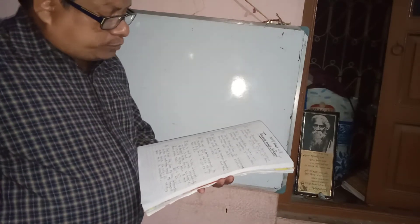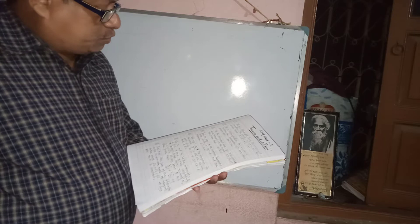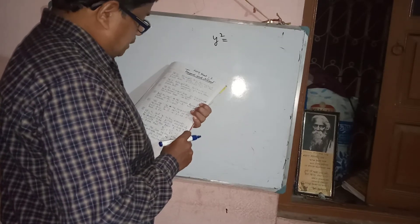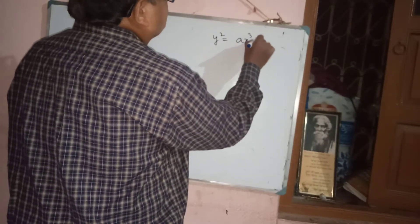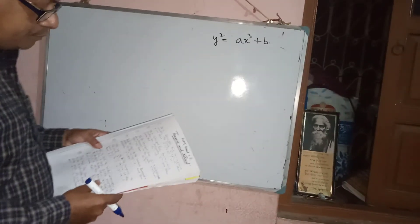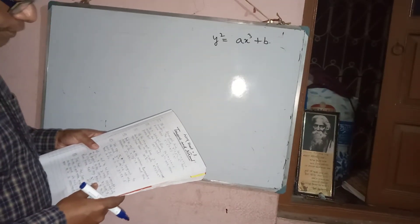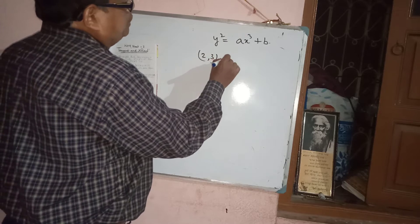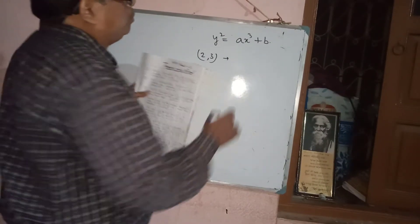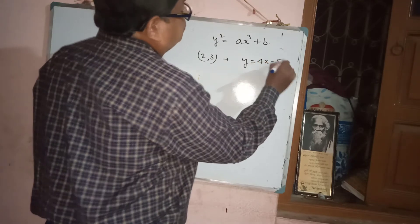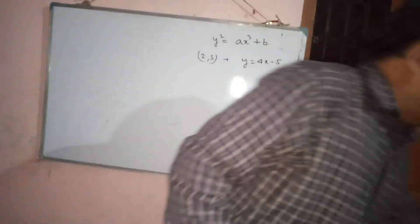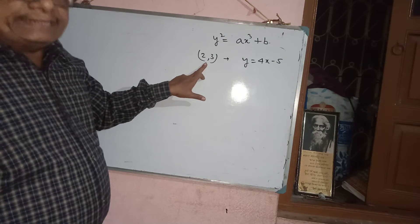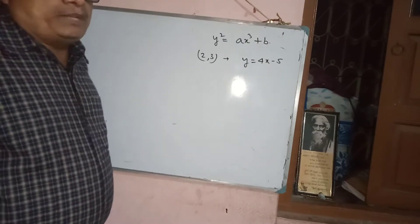Next problem: the equation of the tangent to the curve y² = Ax³ + B at the point (2, 3) is y = 4x - 5. Find the values of A and B. First, differentiate: 2y · dy/dx = 3Ax², so dy/dx = 3Ax²/(2y). Evaluate dy/dx at the point (2, 3): dy/dx = 3A × 4 / (2 × 3).